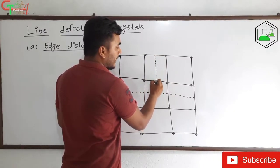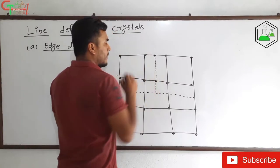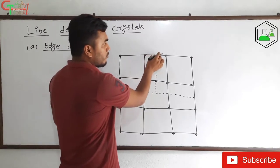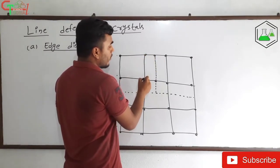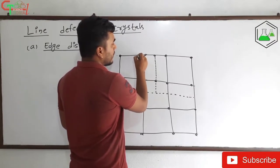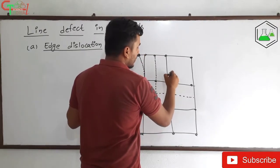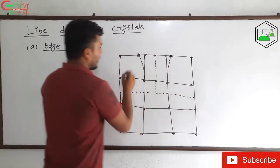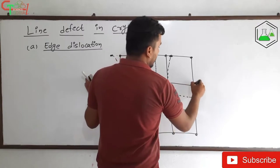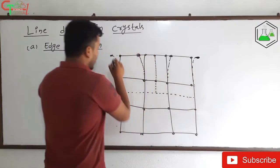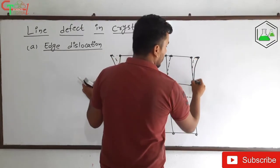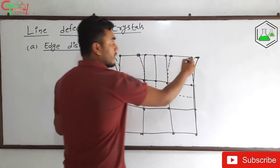We insert this half plane into the crystal. By inserting the plane, these atoms get repelled and change their positions — this atom comes here, this atom comes here, and similarly the adjacent atoms shift as well. This gives us a new crystal structure.